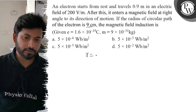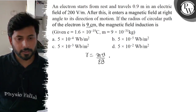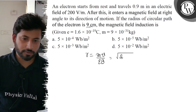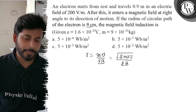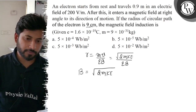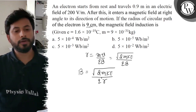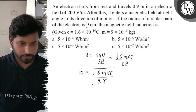So we have to use r equals mv divided by qB — radius of a revolving electron r equals mv by qB. Or we can also use r equals root under 2m times kinetic energy divided by qB.